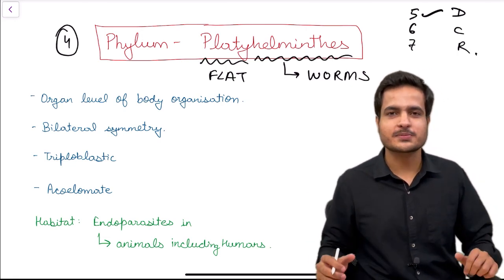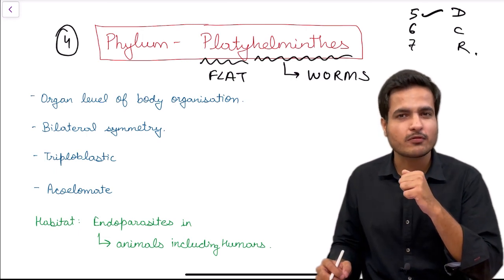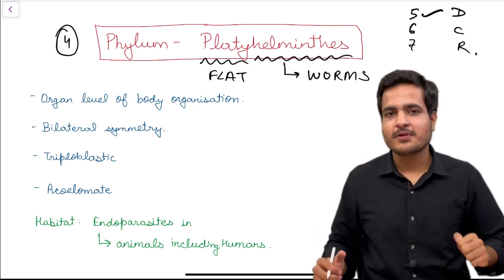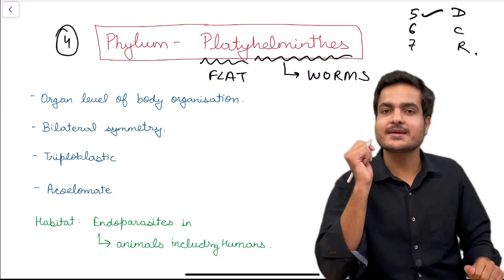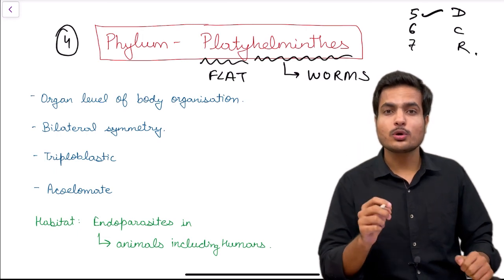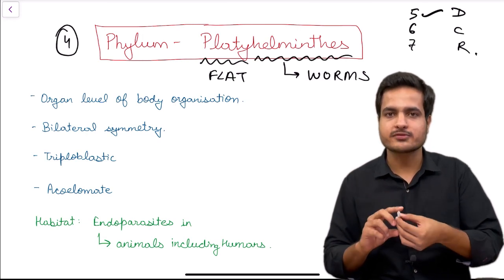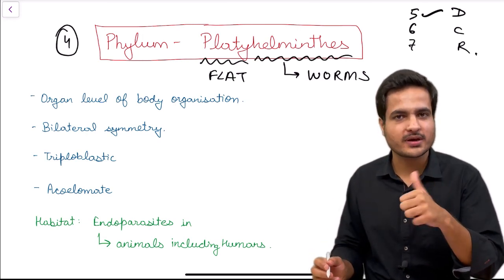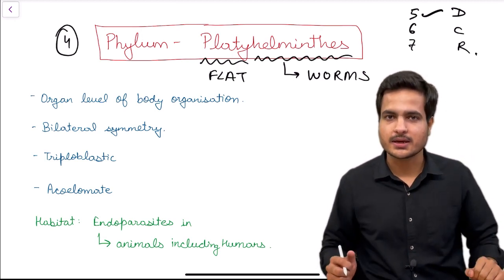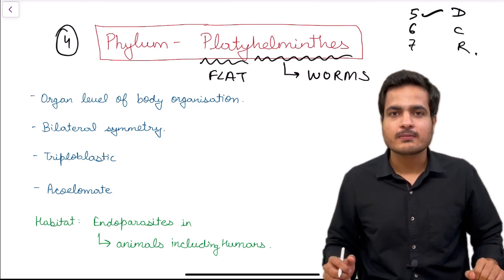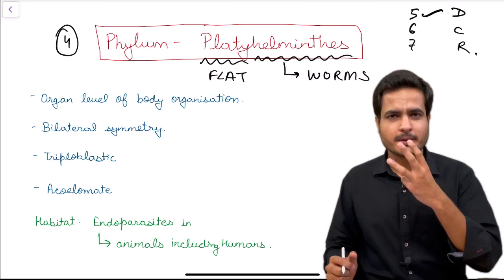The second golden point: whether flat worms have symmetry or not. Yes, flat worms have symmetry, and it is not radial symmetry — it's bilateral symmetry, meaning only a single plane through the center divides the organism into two identical halves. In Porifera we had no symmetry; in Coelentrata and Ctenophora we had radial symmetry; now in Platyhelminthes we have bilateral symmetry.